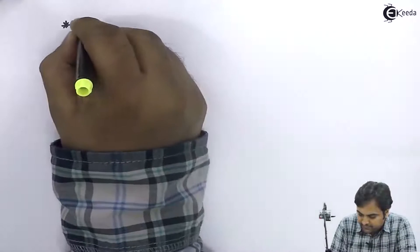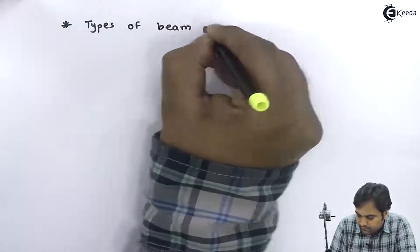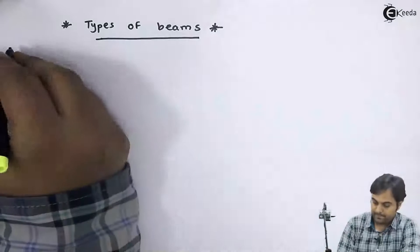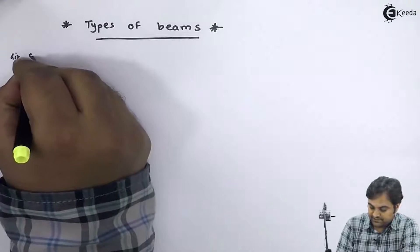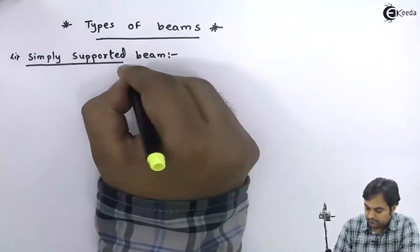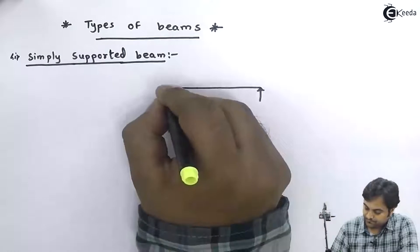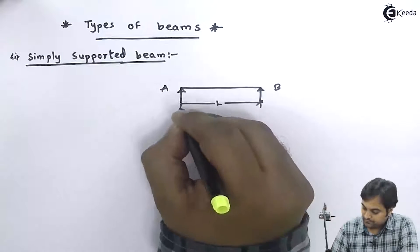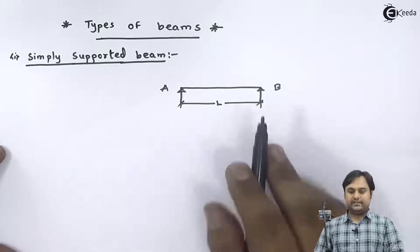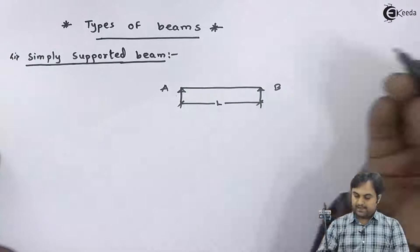First, I'll explain how many types of beams there are. The types of beam. The first one is the simply supported beam. If we have a beam whose length is capital L and it is supported at its extreme ends, that kind of beam is called a simply supported beam.